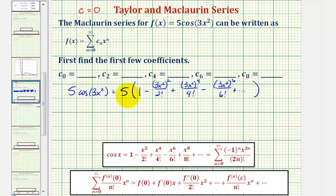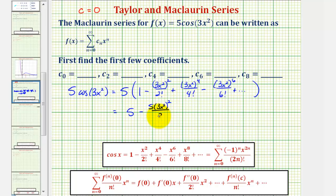Now notice here, if we distribute five, we'd actually find c sub zero through c sub eight, where c sub eight would be the coefficient of the degree eight term, and notice how this term here would have degree eight. So let's go ahead and find c sub zero through c sub eight, and then we'll come back and write this Maclaurin series in summation notation. If we distribute five, we would have five minus five times (3x²)² over two factorial, which is two, plus five times (3x²) to the fourth divided by four factorial, which is 24, and so on. We can stop here again, because this term has degree eight.